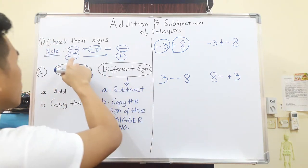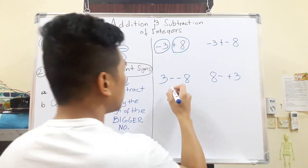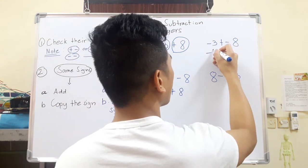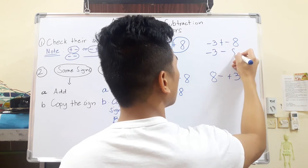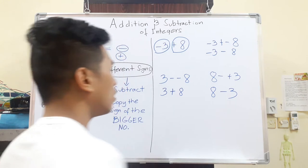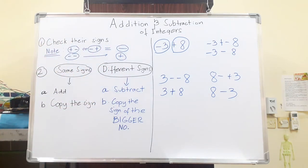If you see minus-minus, it will just become plus. So this one could just be written as 3+8. This one could just be written as -3-8. This could be written as 8-3. Always simplify the signs because it's going to be hard if you have two signs. It might confuse you.